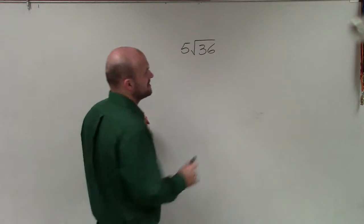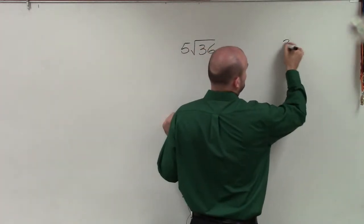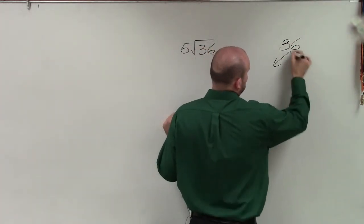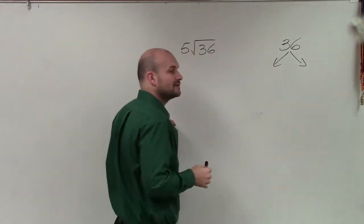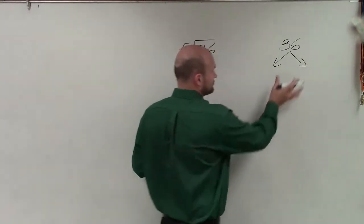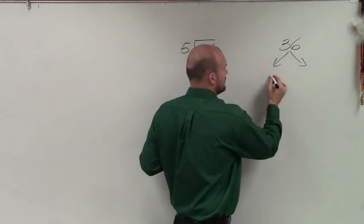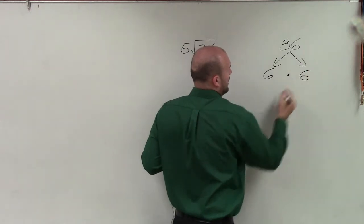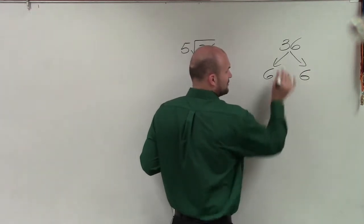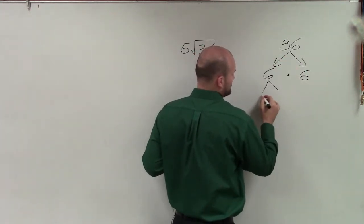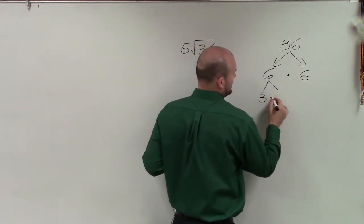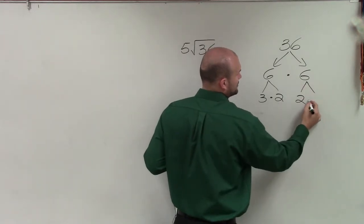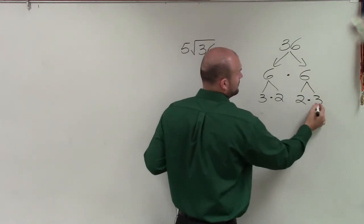However, sometimes we get a little stuck with this. So if you get stuck or you don't understand, we can always go back to our prime factorization. What we do is break down 36 into a list of its prime factors, which would be 3 times 2, and then 2 times 3.